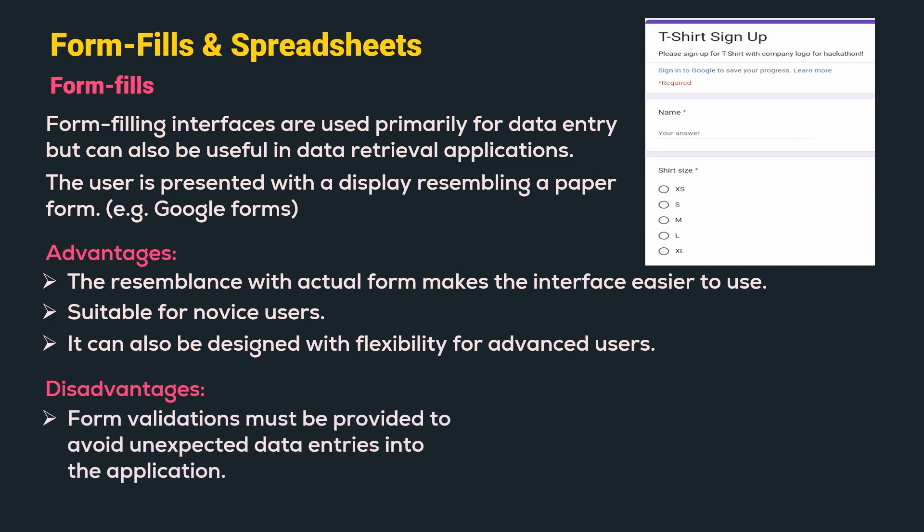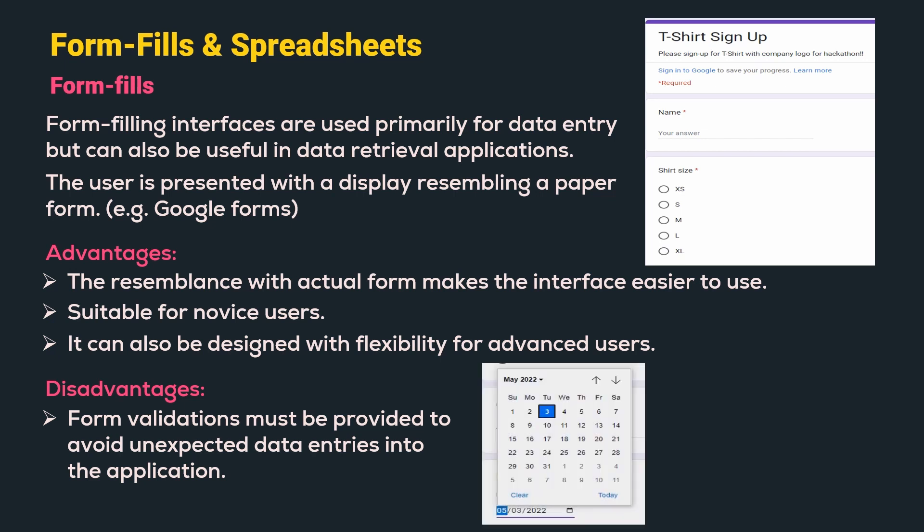Now let us understand few of the disadvantages. Form validations must be provided to avoid unexpected data entries into the application. For example, a date picker should be provided to ensure that the user enters a valid date. Similarly, data validations can be provided for fields like age.